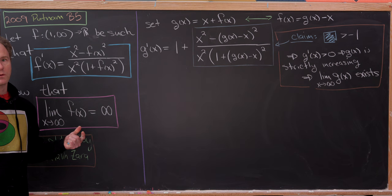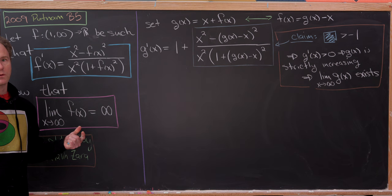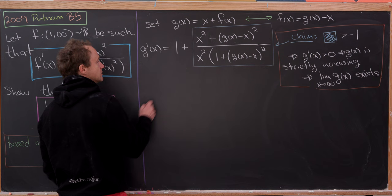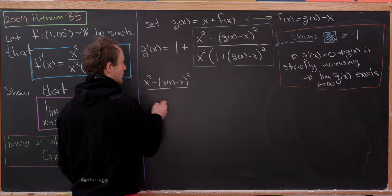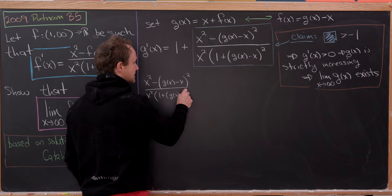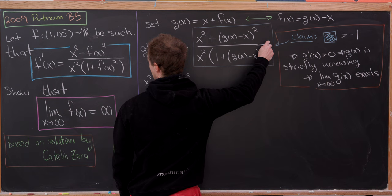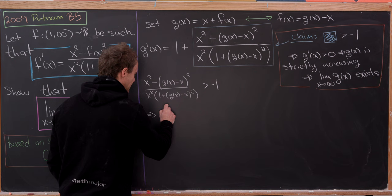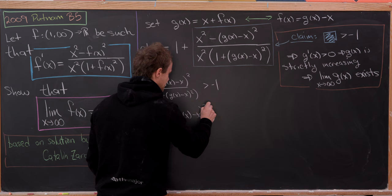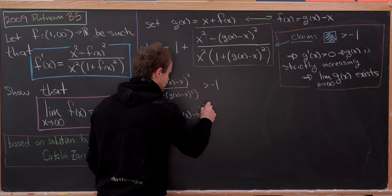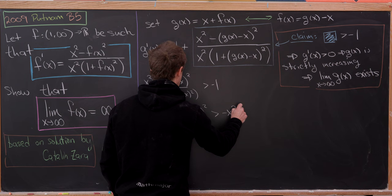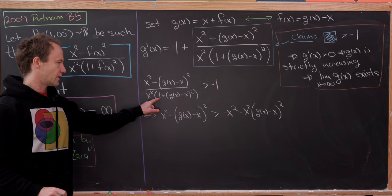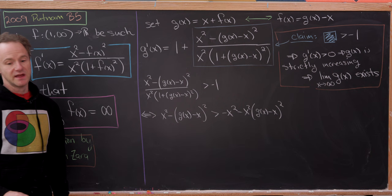Let's prove the claim by starting with the inequality we want and reducing it to something obviously true. We need: [x squared minus (g(x)−x) squared] / [x squared times (1 + (g(x)−x) squared)] > −1. Cross multiplying, this becomes: x squared minus (g(x)−x) squared > −x squared minus x squared·(g(x)−x) squared.